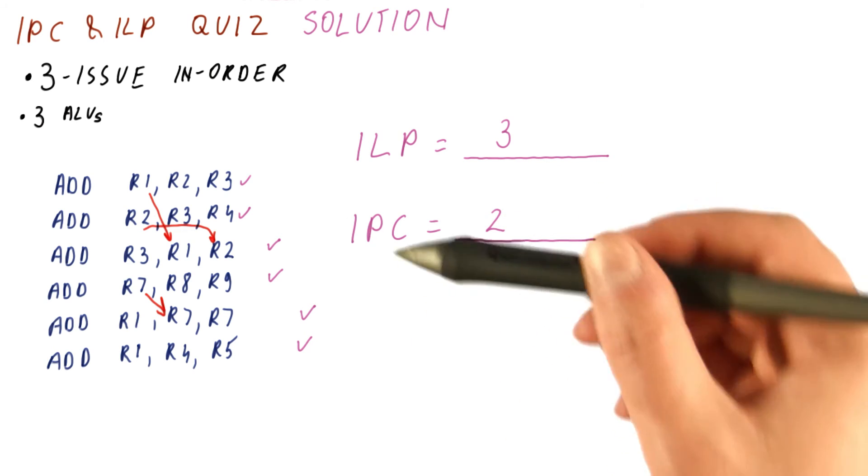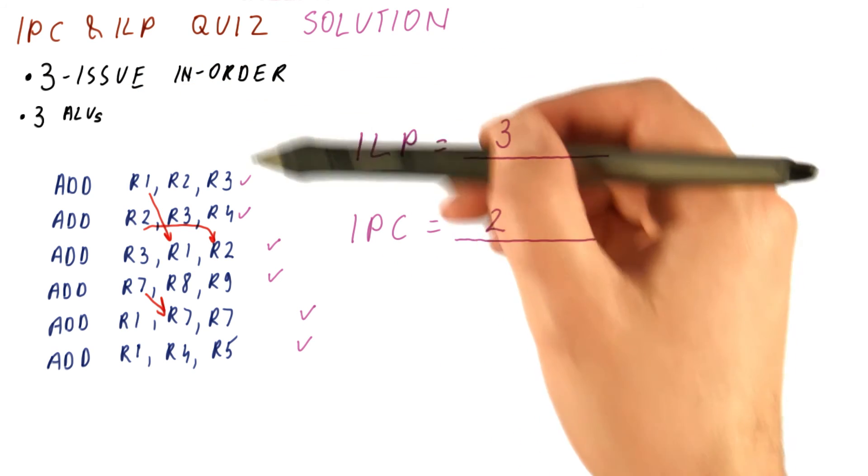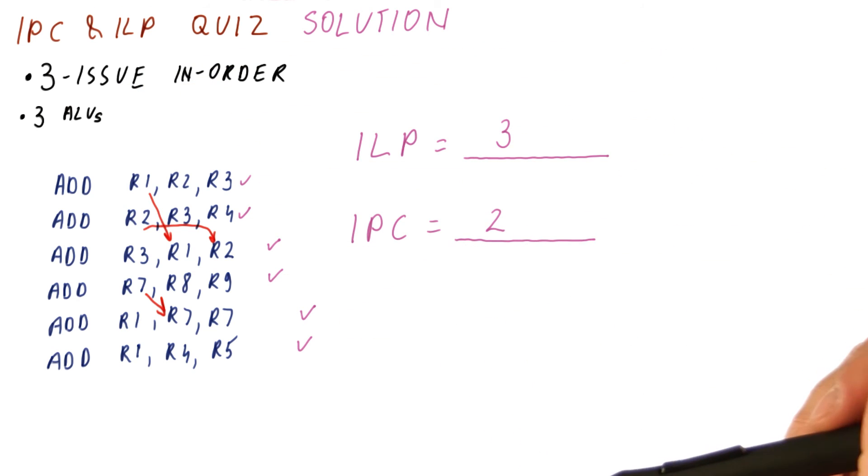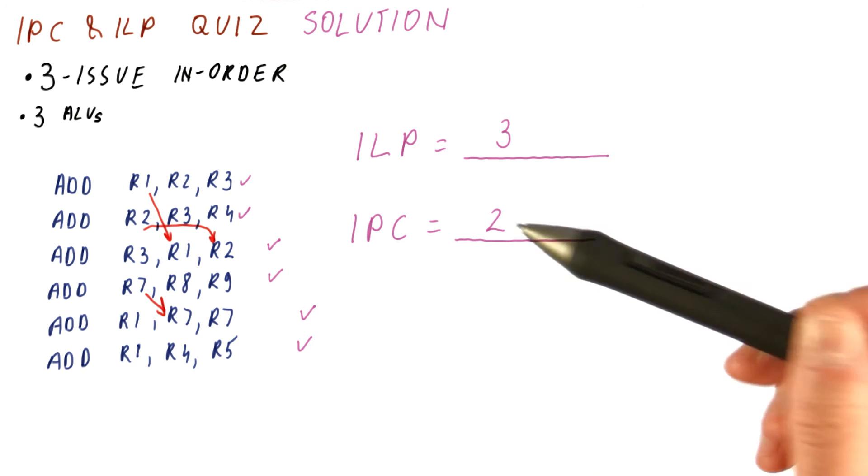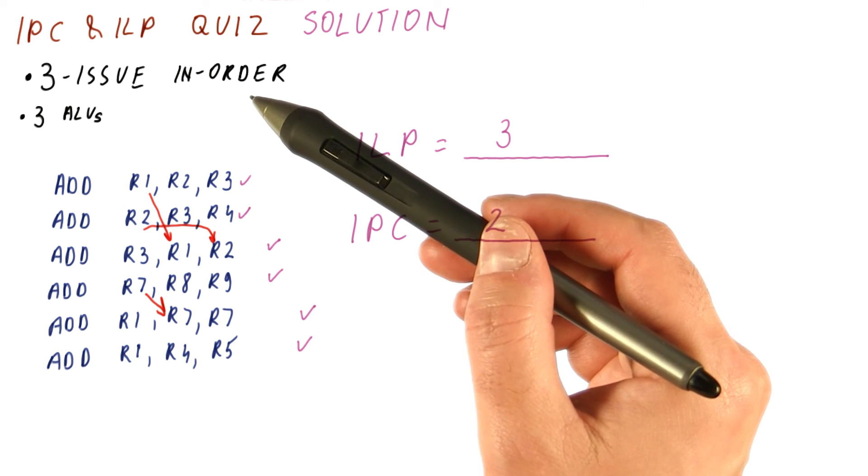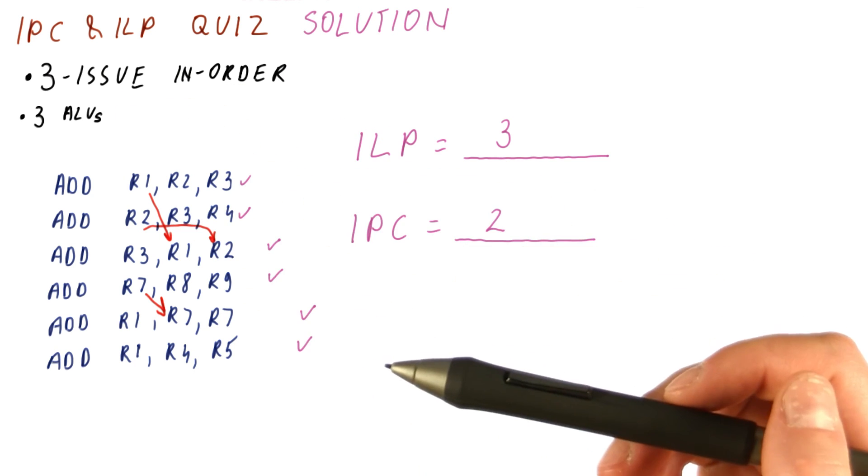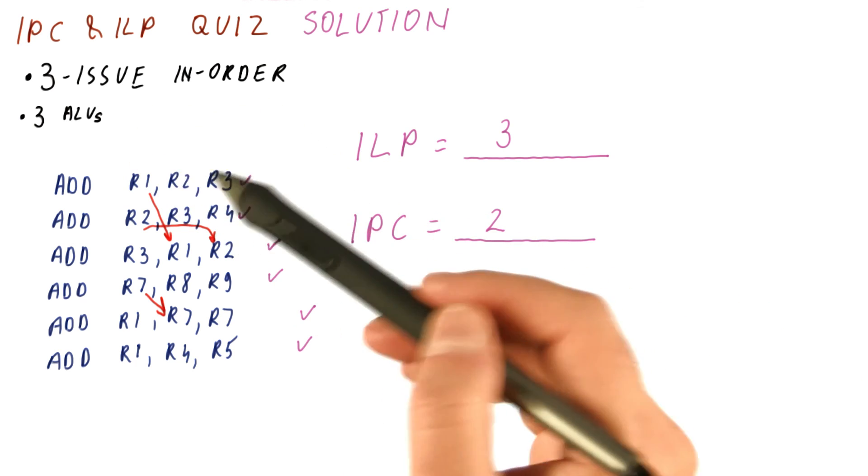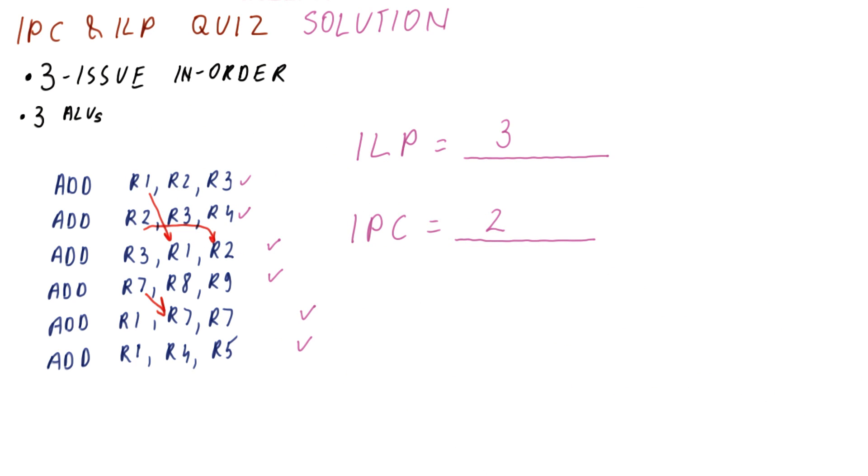It turns out that even if this was a two issue processor, the in-order property really would still limit us to IPC of two. So sometimes one of the things is going to be a limitation. Sometimes another limitation is going to play a dominant role. Sometimes all of the limitations are going to play a role in limiting our IPC.